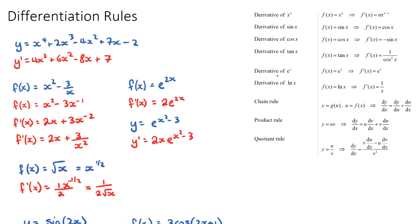For natural log functions, if y = ln(2x + 1), the derivative is: take the derivative of what's inside the bracket — which is 2 — put that on the numerator, and the original bracket goes on the denominator. So y' = 2 over (2x + 1).